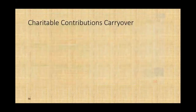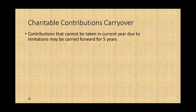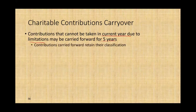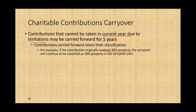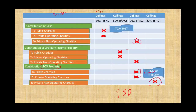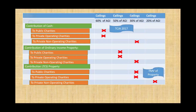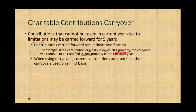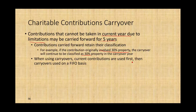What happens if you contribute more than the ceiling allows? Contributions that cannot be taken in the current year due to the limitation can be carried forward five years. Contributions carried forward retain their classification — for example, if a contribution originally involved 30% property, the carryover will still be classified as 30% property. When using a carryover, current contributions are used first, then carryovers are used on a FIFO basis.